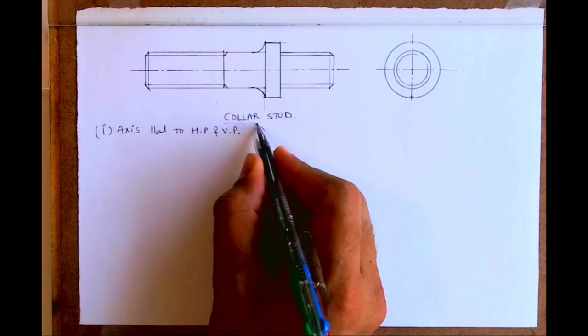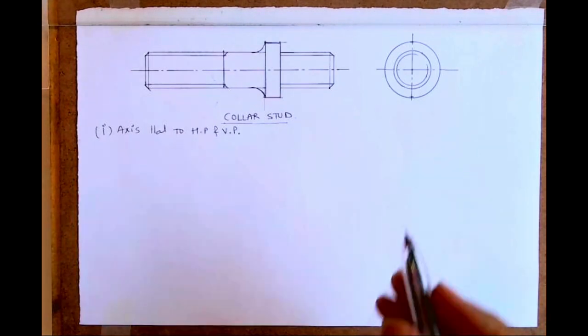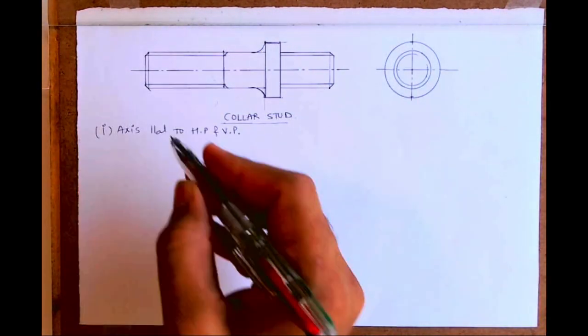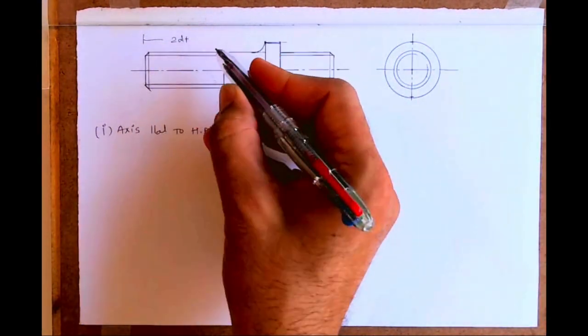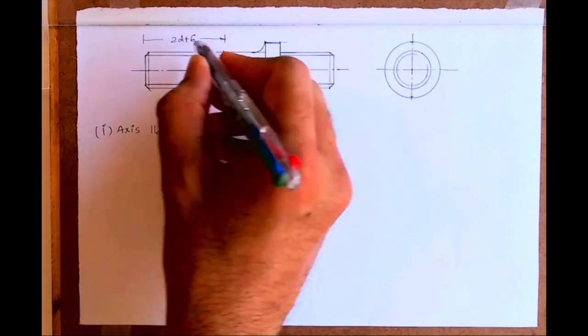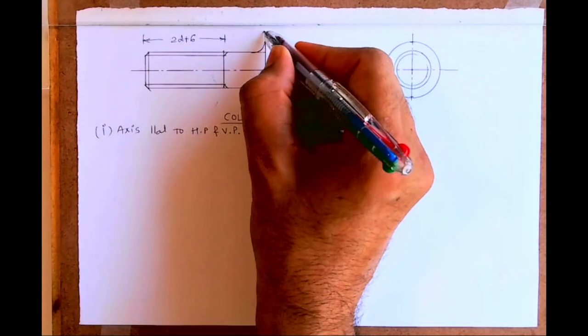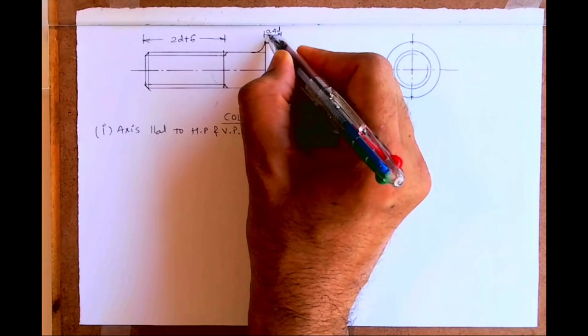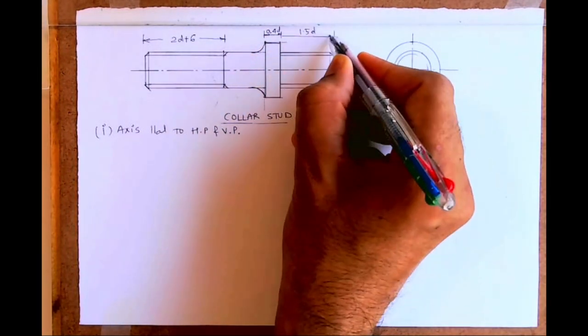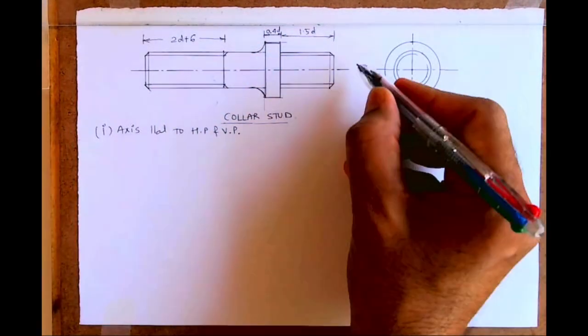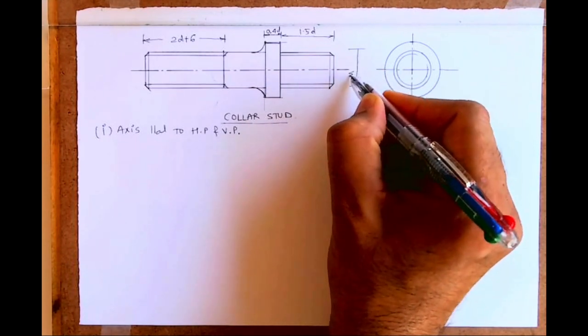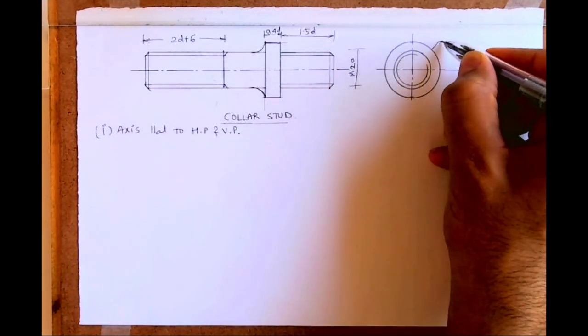Welcome to technical drawing. Today we're going to learn about collar stud with axis parallel to HP and VP. This is 2D plastic, this is 0.4D, this is 1.5D, this is M20, that is D.